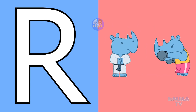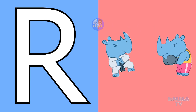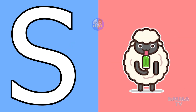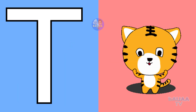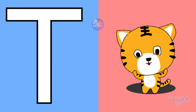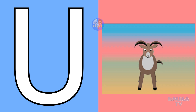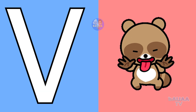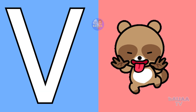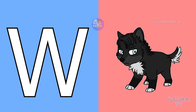R for rhinoceros, S for sheep, T for tiger, U for urial, V for vole, W for wolf.